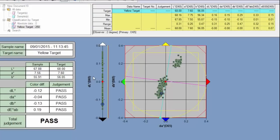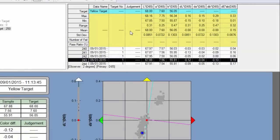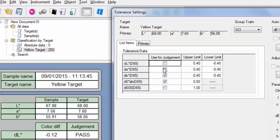Create virtual targets by averaging a range of samples. Tolerance settings and various search functions allow you to set up conditions that quickly extract the closest color match.